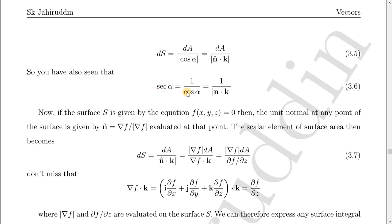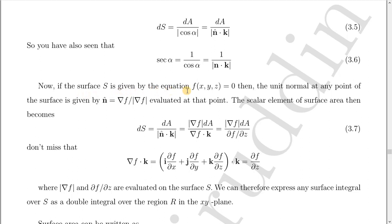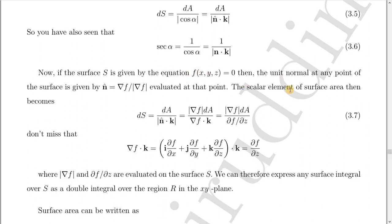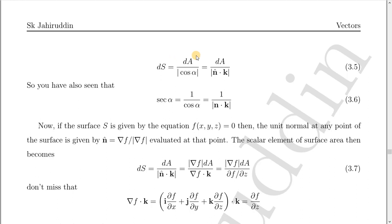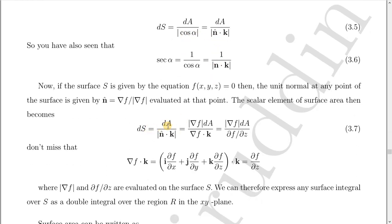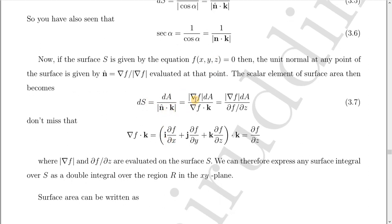We also note that sec α = 1 / cos α, so sec α = 1 / (n̂·k̂). Now if the surface equation is given by f(x, y, z) = 0, then the unit normal at any point of the surface is n̂ = ∇f / |∇f|. This comes from the basic concept of the gradient. The scalar element of surface area becomes dS = dA / (n̂·k̂) = |∇f| dA / (∂f/∂z).